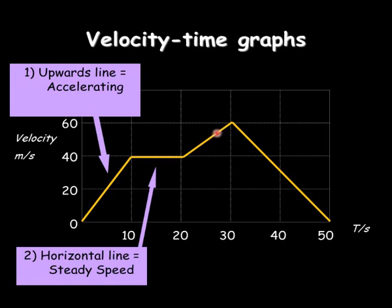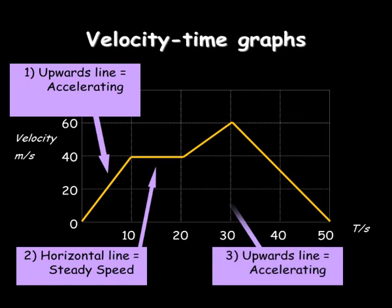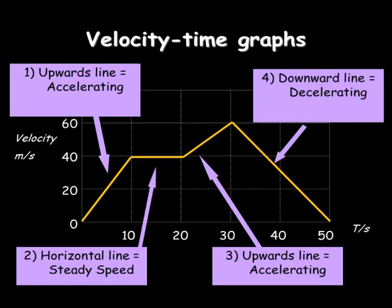You can see the line goes up again here. This means that it's accelerating again until it gets to a maximum speed of 60 metres per second. And then the line going all the way back down to 0 means that it's decelerating. The opposite of accelerating means slowing down until it comes to rest after 50 seconds.